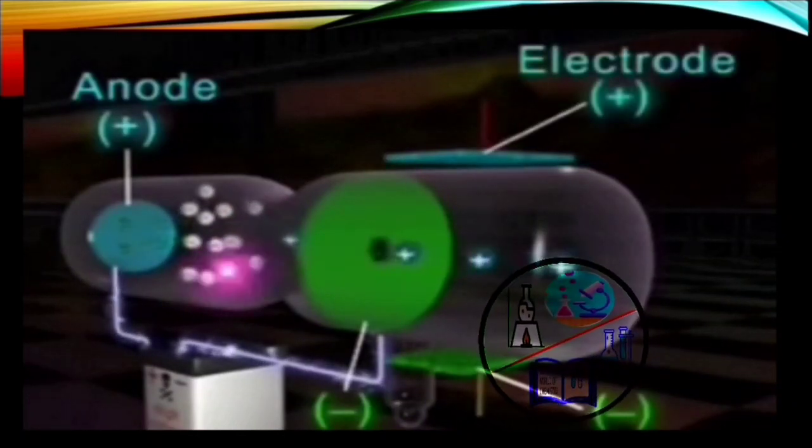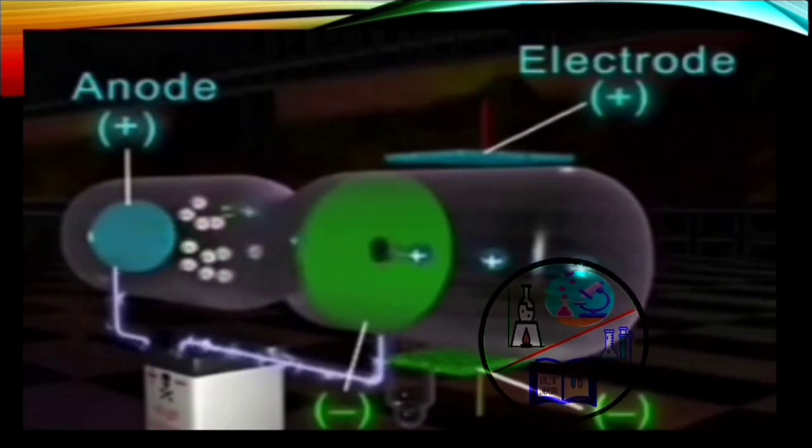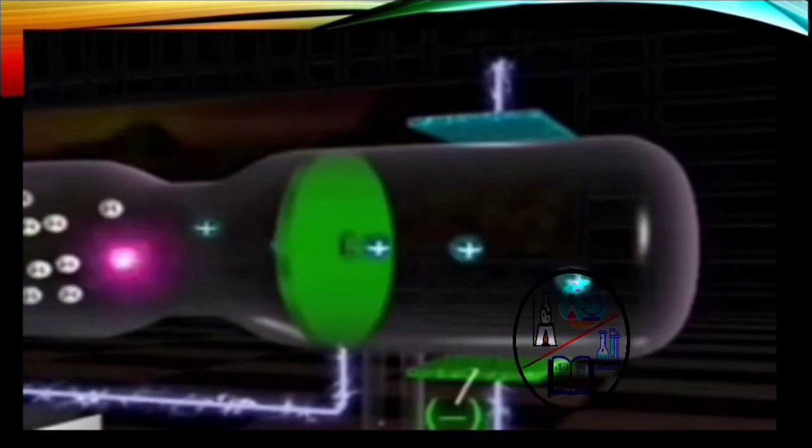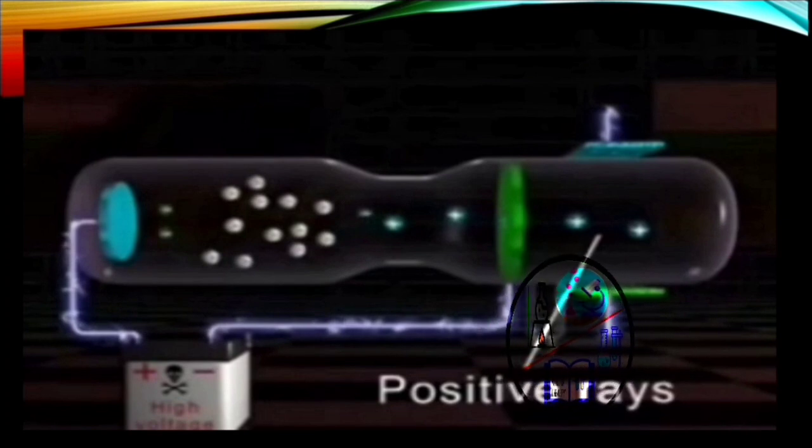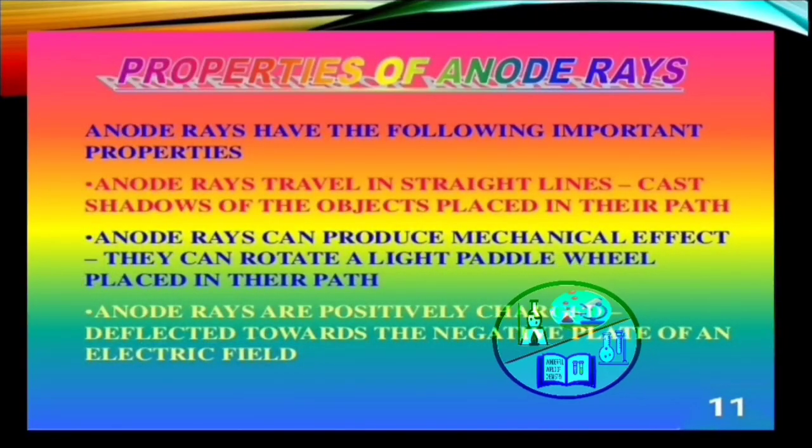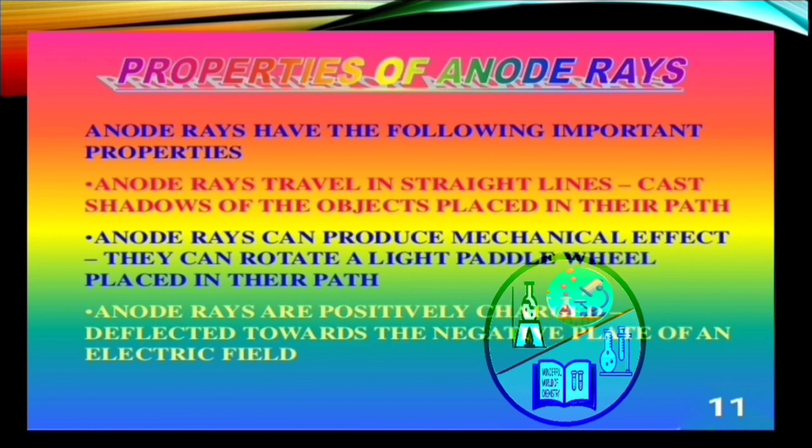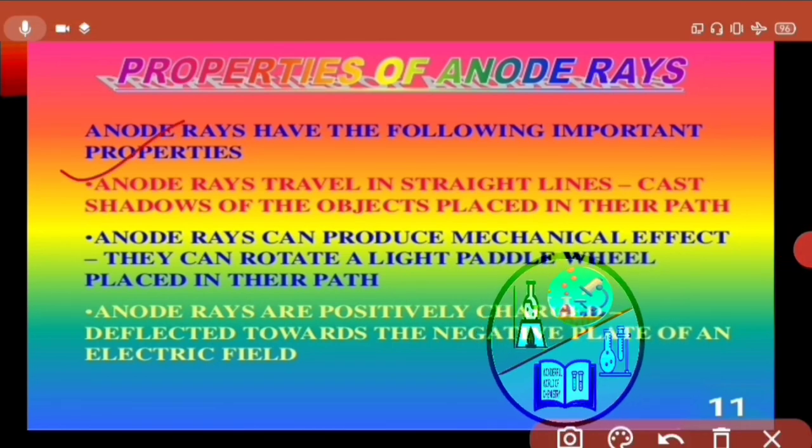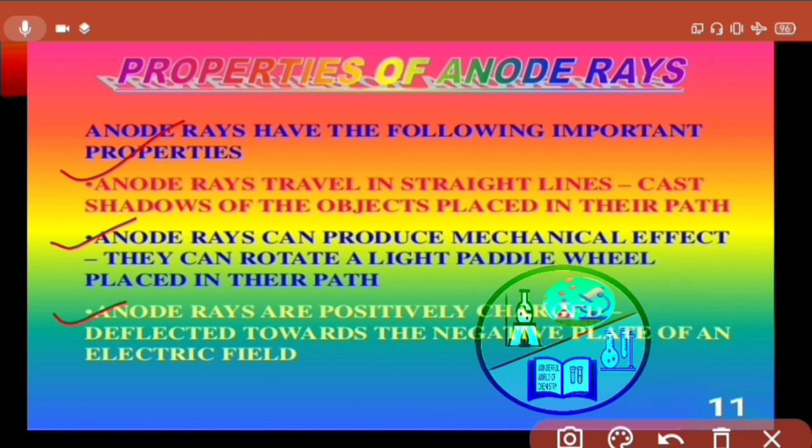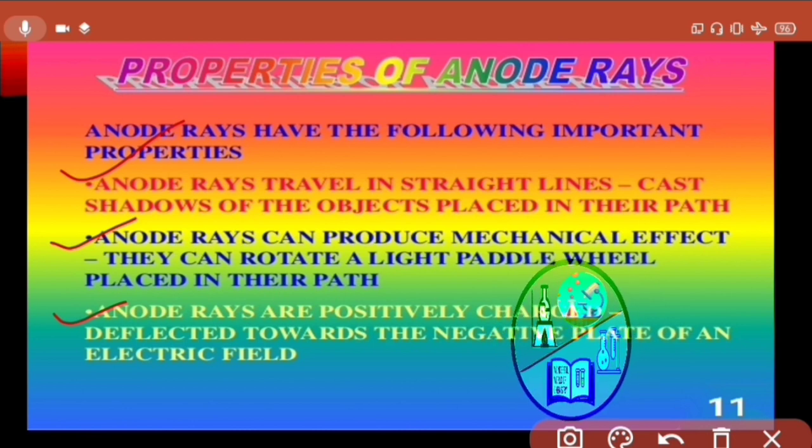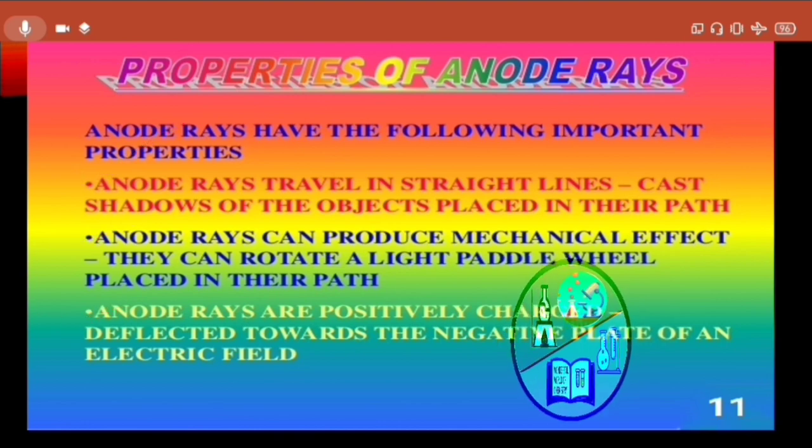And when additional electric field is brought, the positive rays gets attracted towards the negative plate. Now, let's see the properties of anode rays. Anode rays travel in straight lines. That is, they cast shadows of the objects placed in their path. Anode rays can produce mechanical effect. That is, they can rotate a light pedal wheel placed in their path. And anode rays are positively charged as they deflect towards the negative plate of an additional electric field.